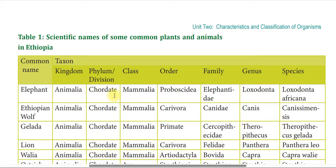The class is Mammalia, or the order is Proboscidea, and the family is Elephantidae. This gives the classification of the elephant.